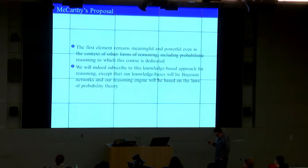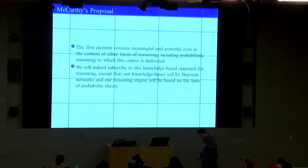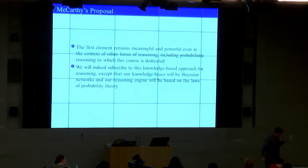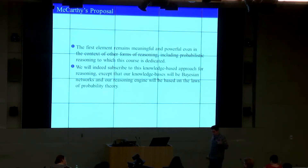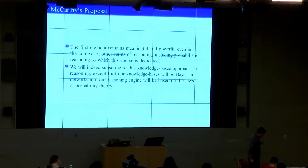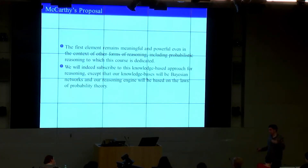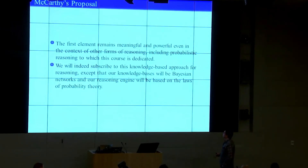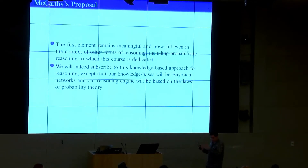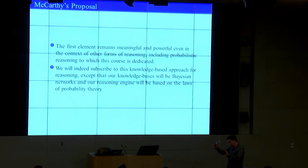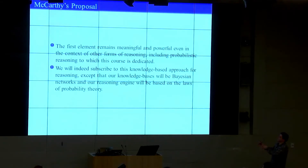The first part of McCarthy's proposal — model-based reasoning — remained quite influential to this day. Most of this course will be based on that, except that instead of using logic for modeling, we will use probability. And instead of logical deduction for reasoning, we're going to use the laws of probability. Later, when we talk about the second milestone in AI, we'll see how model-based reasoning is contrasted by what we call function-based reasoning, which is exemplified by deep learning today.